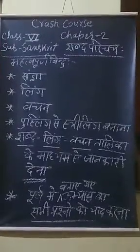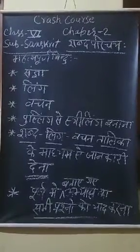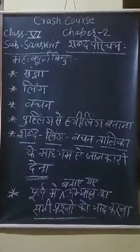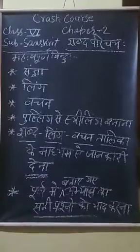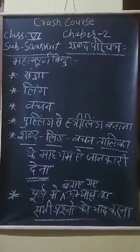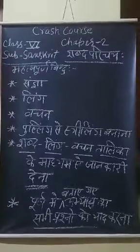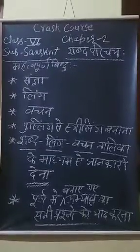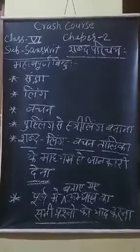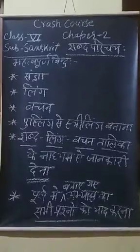स्त्रीलिंग: जिन शब्दों से स्त्री जाति का बोध हो, उसे स्त्रीलिंग कहते हैं। नपुंसकलिंग: जिन शब्दों से न पुल्लिंग न स्त्रीलिंग का बोध हो, उसे नपुंसकलिंग कहते हैं। जैसे — पर्ण, चक्र, रूप्यक आदि।